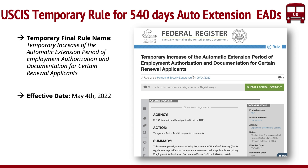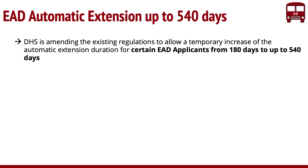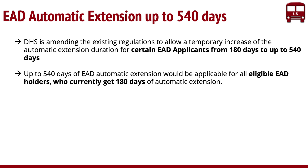When we wrote the article on the blog it was yesterday, but basically from today it's public, and you can see this in the Federal Register with full details. You can also submit a comment if there is something you don't like or have suggestions. They are amending existing regulations for a temporary increase for certain eligible EAD applicants from 180 days to 540 days. This is only applicable for people who are currently eligible for the 180-day automatic extension.